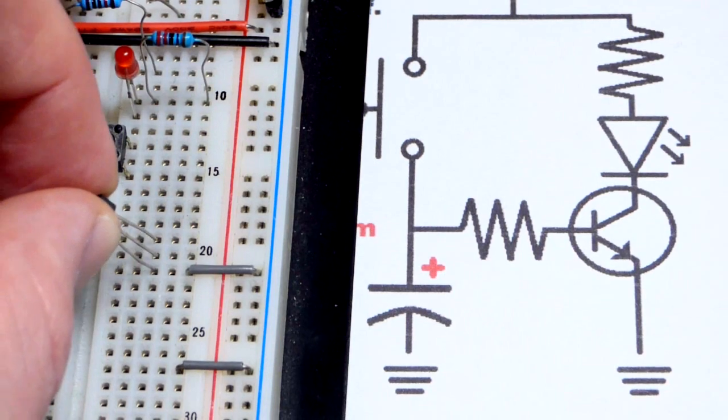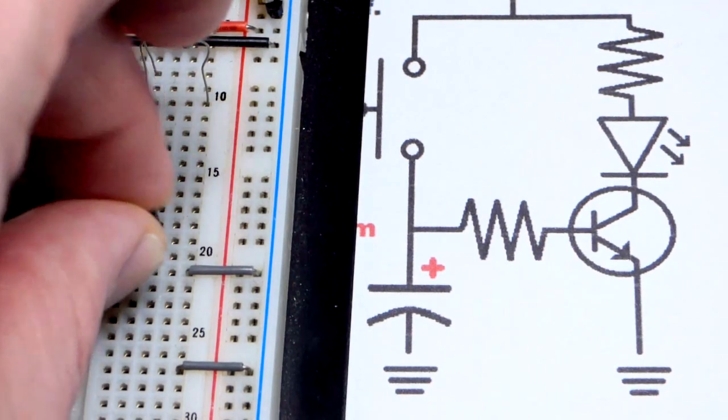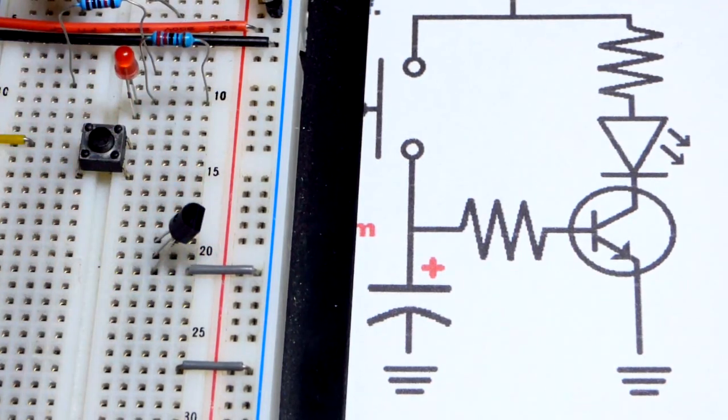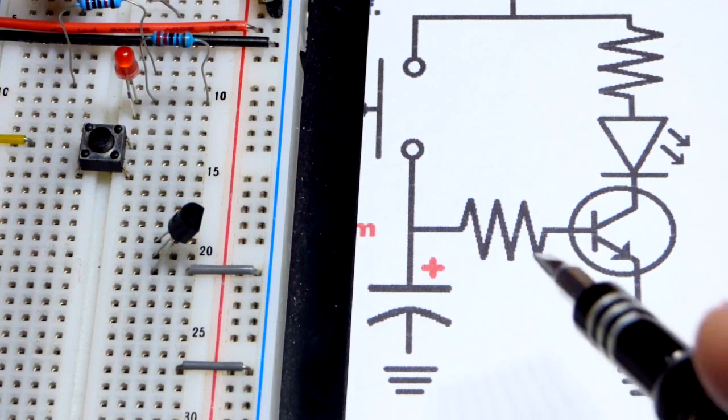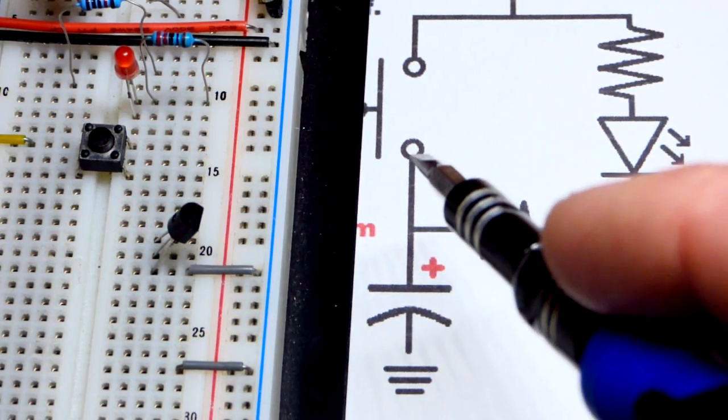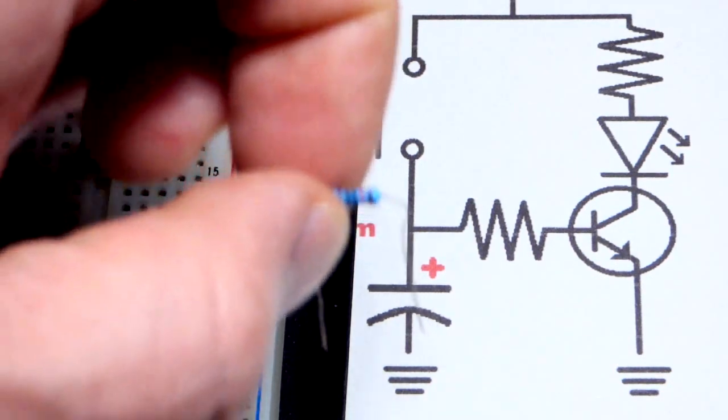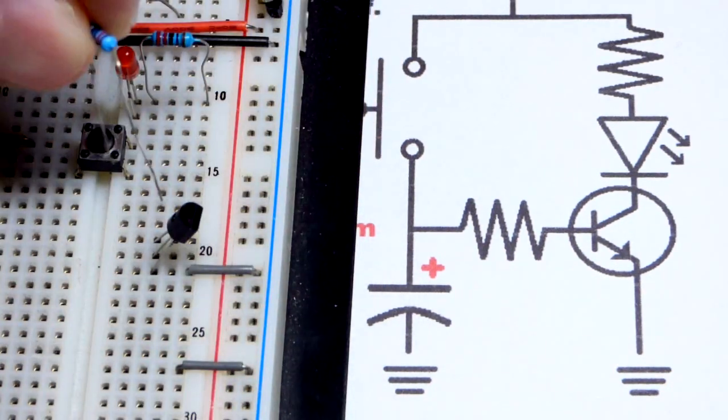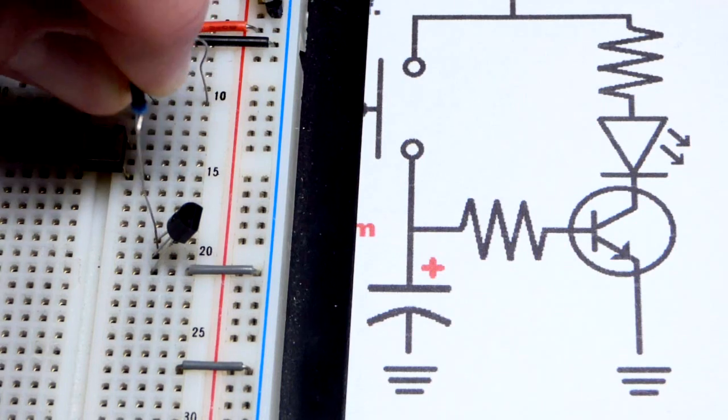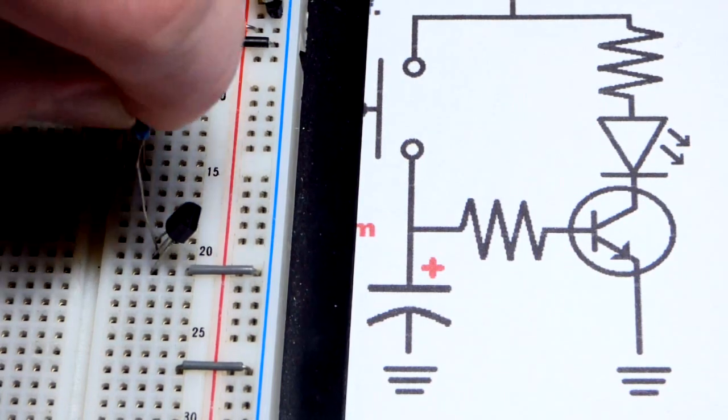We're going to put the emitter to the bottom pin now to that jumper there. The base is one row above it. We're going to connect this resistor from the base of the transistor to the other side of the switch. Pretty straightforward. We're going to use a 10 kiloohm resistor and put that there to the base.